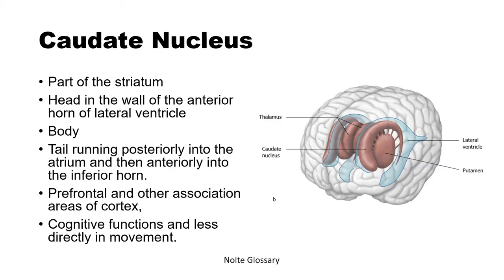Another view of the caudate nucleus shows the lateral ventricles; the caudate is nestled in there, so when you slice across you'd see the head here and the tail here — that's why it's confusing on some slices. The tail runs posteriorly into the atrium and then anteriorly into the inferior horn. The caudate sees prefrontal and other association areas of the cortex, giving it cognitive function and making it less directly involved in movement than other basal nuclei.